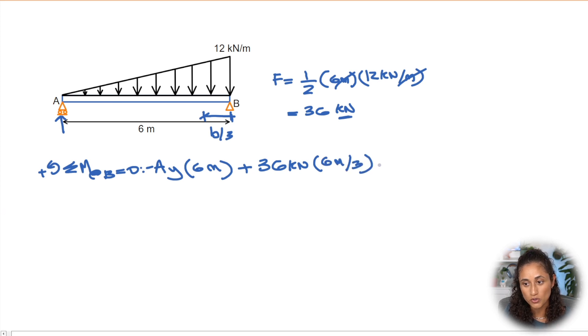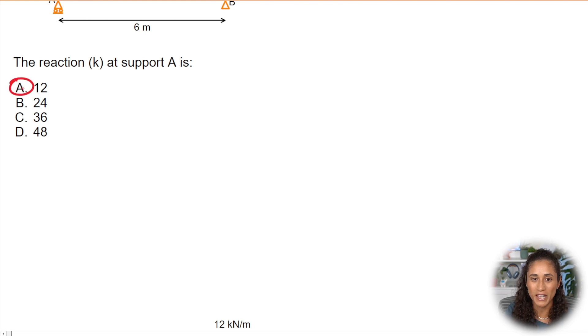Now equal this equation to zero and then solve for Ay. We can take this term to the other side, so we're going to have Ay equals 36 times six over three divided by six, and that will give you 12 kilonewtons. This is the reaction at A. If we take a look at the multiple choice, the answer is A.